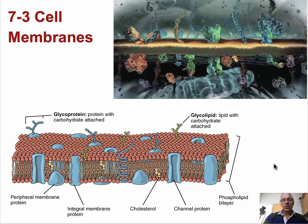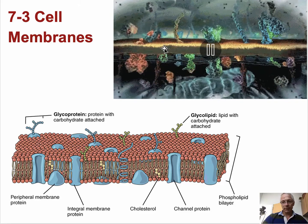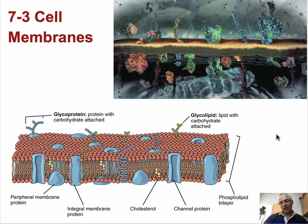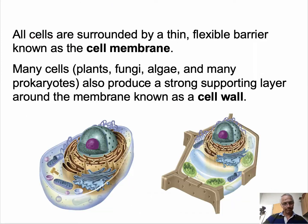Cell membranes are enormously important to the functioning of cells. The basic structure of all membranes inside of cells and surrounding cells is this lipid bilayer. The chemical that makes up that double layer of lipid molecules — if you have a pure sample of it — is liquid, like a bottle of corn oil. So it is fluid, dynamic, always changing, and there are tons of proteins plugged in there with lots of different functions.